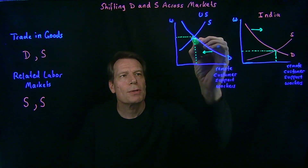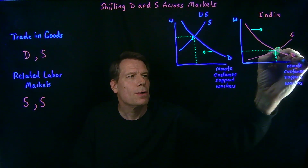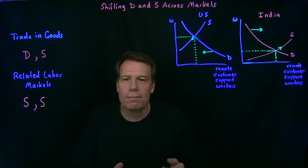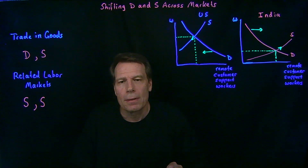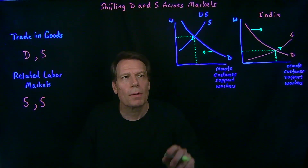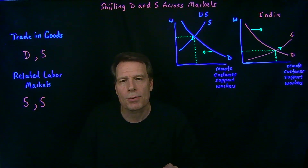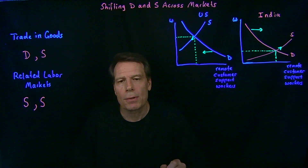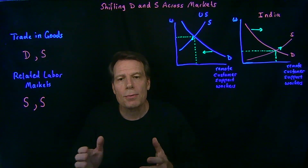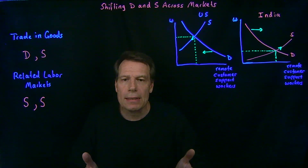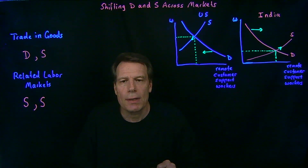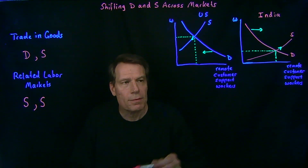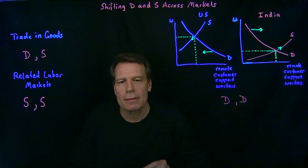That puts downward pressure on wages in the U.S. and upward pressure on wages in India. And if international calls become equally cheap as domestic calls, and if Indian remote customer support workers are the same in every way as U.S. customer support workers, we would see the law of one price take hold — wages would equalize across the two countries. Of course, there could be compensating differentials; perhaps Indian remote customer support workers are not as effective at certain kinds of calls. But in either case, we find that demand shifts in one direction in the U.S. and in the other direction in India — so now we have a case where demand shifts in both places, but in opposite directions.